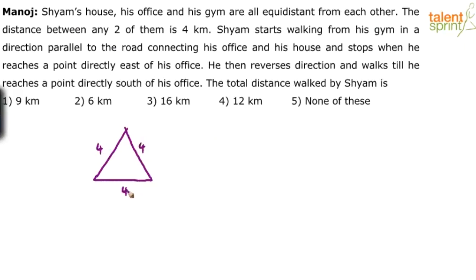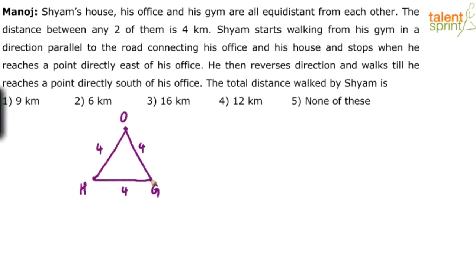Each length is 4 kilometers. He starts walking from his gym. Let's assume this is the gym — you can take any point as anything, but take it in a way that you follow the statements. So this is the road that connects his office and his house, and he stops when he reaches a point directly east of his office. So let's say he's walking this way, eastward of the office. So we consider this as the office and house, and gym positioned accordingly. He walks in a direction parallel to HO — a road parallel to the road connecting his office and his house.